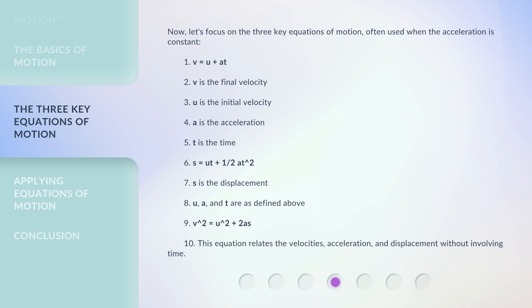S equals U plus 1 half at squared. S is the displacement. U, A, and T are as defined above.